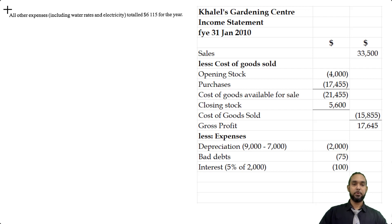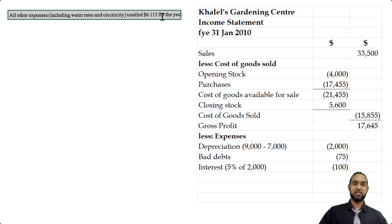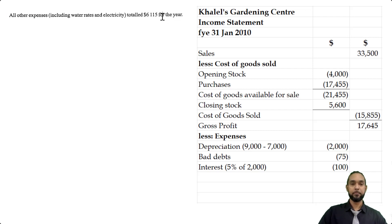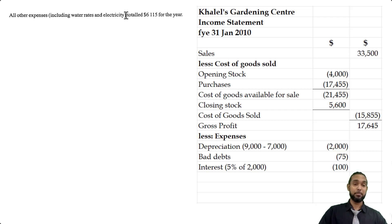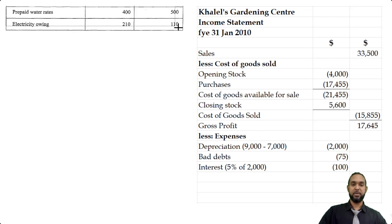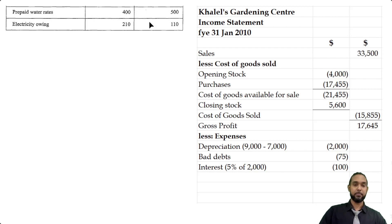Item four tells us all other expenses including water rates and electricity total $6,115 for the year. When I did this question with my class some time ago, a lot of students took that figure of $6,115 and used it directly in the income statement. But the phrase 'including water rates and electricity' led me to think we needed to take into consideration the opening and closing balances provided in the table above — specifically the prepaid water rates and electricity owing. One is a prepaid expense, which is an asset; one is an accrued expense, which is a liability.